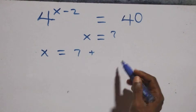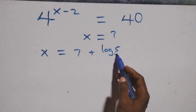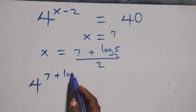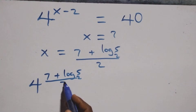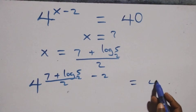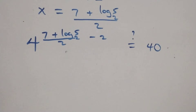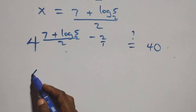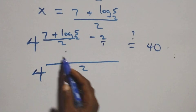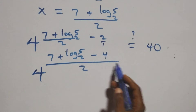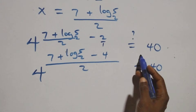Substituting x equals (7 + log₂5)/2, we get 4 raised to power (7 + log₂5)/2 minus 2, and we check if this equals 40. Bringing the power together as one fraction, we have 4 raised to power 3 plus log₂5, then minus 4, equals 40.